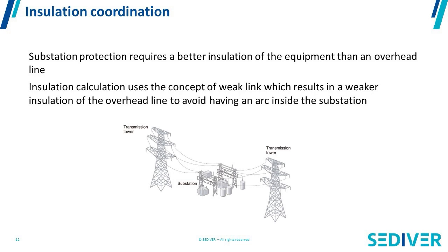So when you design a line and when you try to design the insulation along the line, you define a weak link. If you have an electrical event like lightning, you never want to have an arc inside a substation. By definition, insulation coordination is a set of calculations made by the designer of the line, by which he's going to put the weak link on the transmission line and not in the substation, so that the insulation on the transmission line is lower than the insulation in the substation.